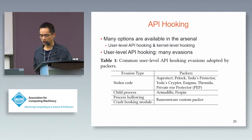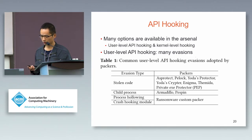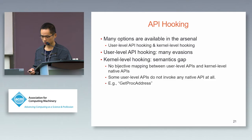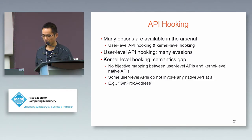Since Bing Unpack needs to hook APIs of the packed sample, many options are available such as user-level API hooking and kernel-level API hooking. For user-level API hooking, there are many evasions to API hooking — common user-level API hooking evasions adopted by several packers include stolen code, child process, process hollowing, and crash hooking model. For kernel-level hooking, there is a semantic gap between kernel-level API and user-level API. We cannot find an objective mapping between user-level APIs and kernel-level APIs. Some user-level APIs, such as GetProcAddress, do not invoke any native API at all.